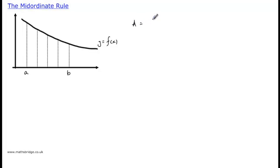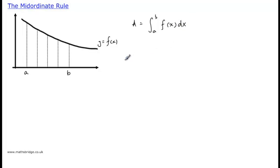The mid-ordinate rule is a method that we can use to find the area underneath a particular graph. Similar to the trapezium rule that you would have already used, it can be used to estimate an integration.